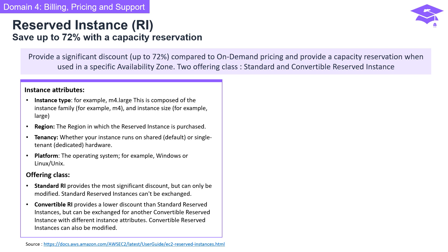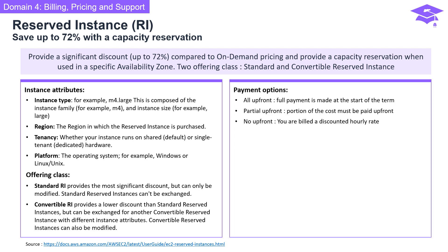Standard reserved instances provide the most significant discount but can only be modified — no exchanges. Convertible reserved instances offer a lower discount but bring flexibility: you can exchange them for another convertible reserved instance with different attributes, and they can also be modified. Payment options for reserved instances include: all up front — full payment at the start of the term; partial up front — pay a portion up front; or no up front — billed at the discounted hourly rate.